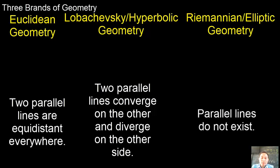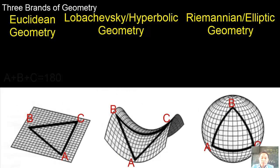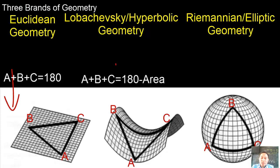In terms of the sum of the angles of any triangle, of course it is 180 degrees in Euclidean. In Lobachevsky, the sum of the angles of any triangle is less than 180 degrees. We say that A plus B plus C equals 180 minus the area of the triangle. And the sum of the angles of any triangle in Riemannian geometry is greater than 180 degrees. That is, A plus B plus C is greater than 180 or equals 180 plus the area of the triangle.